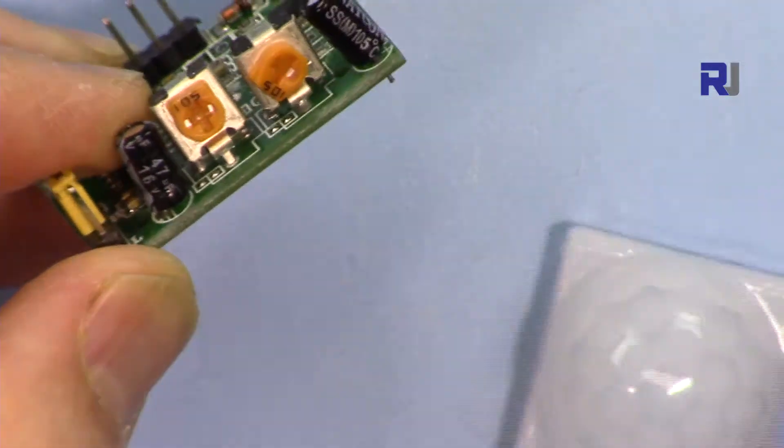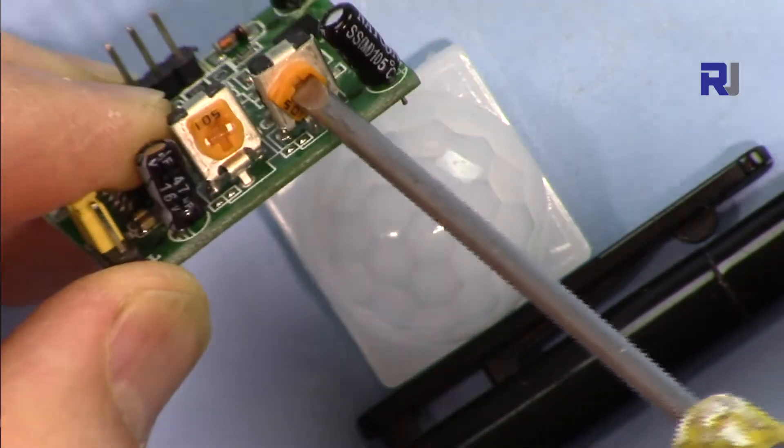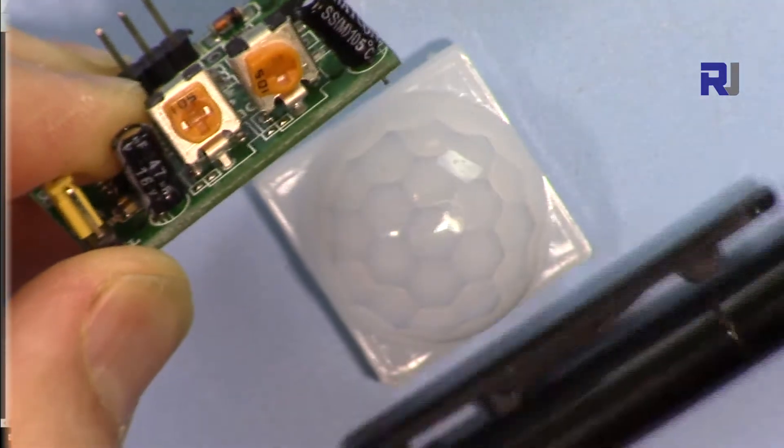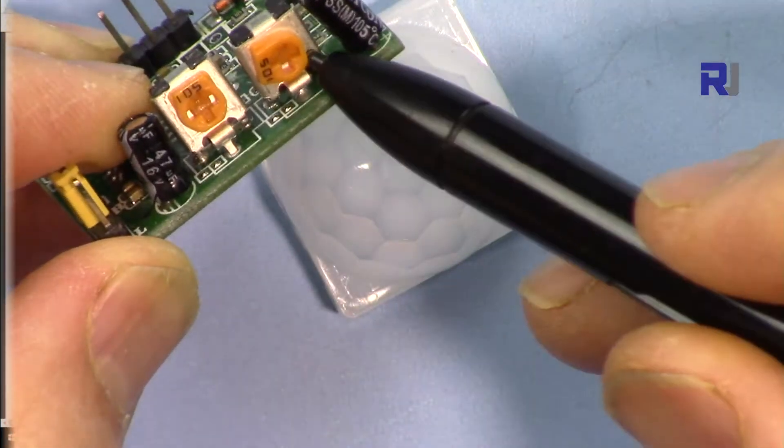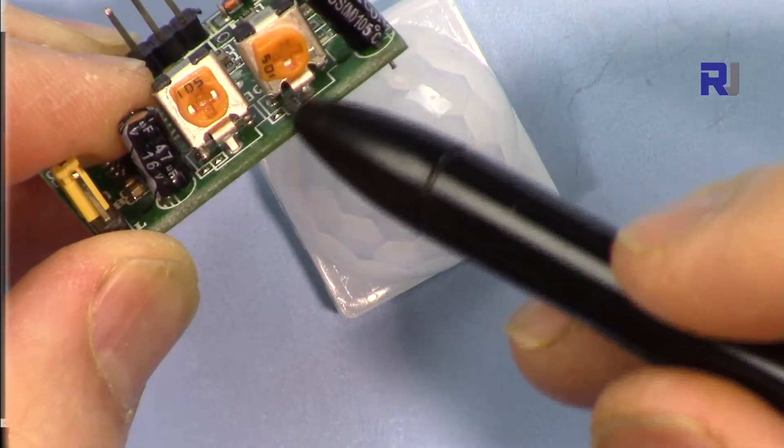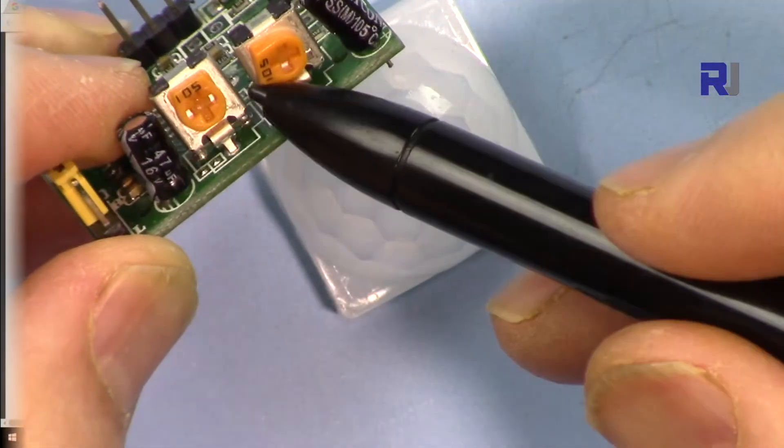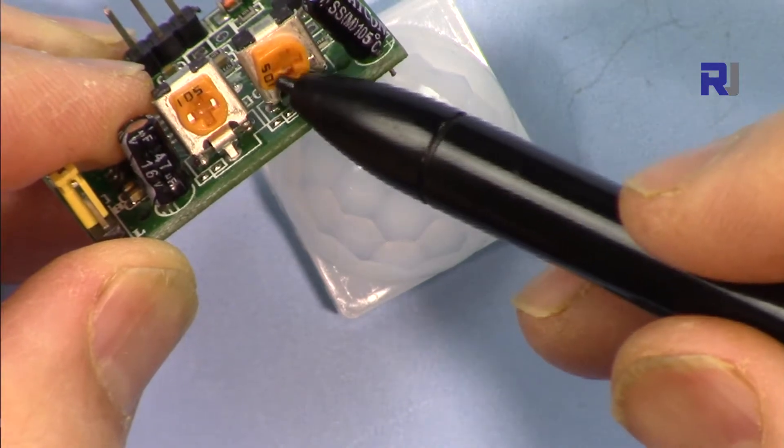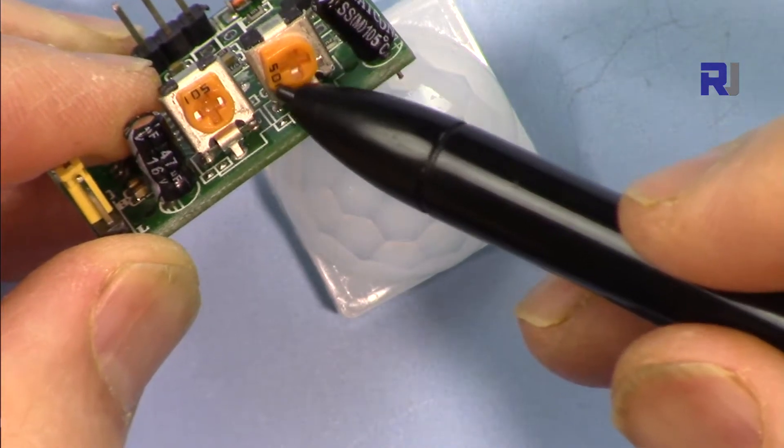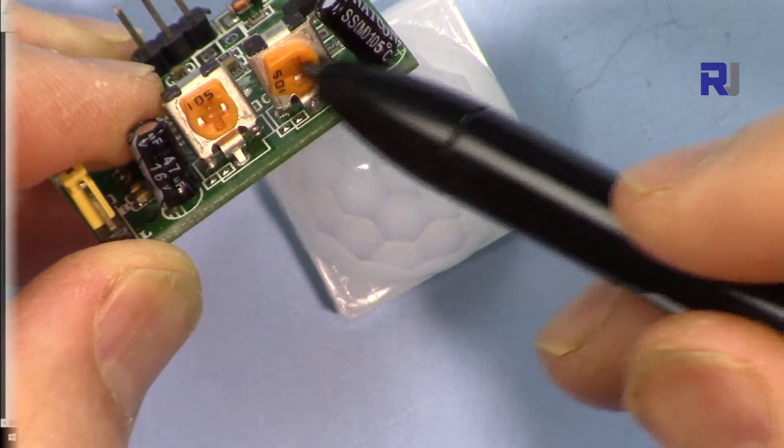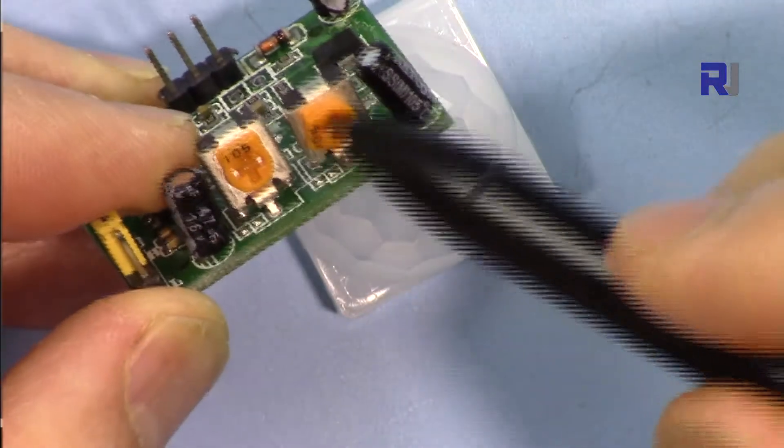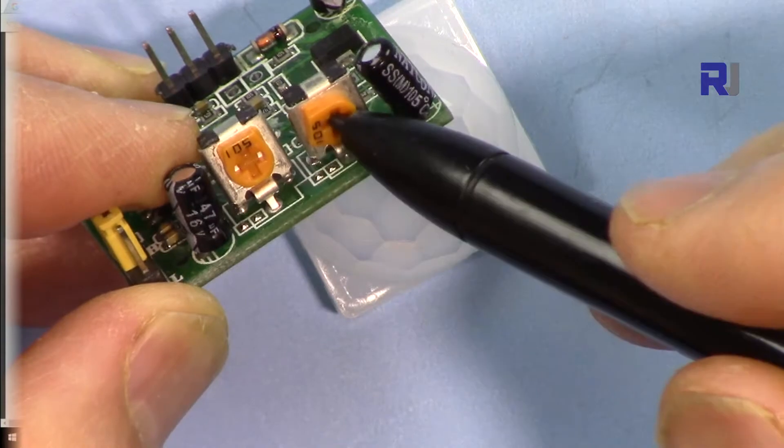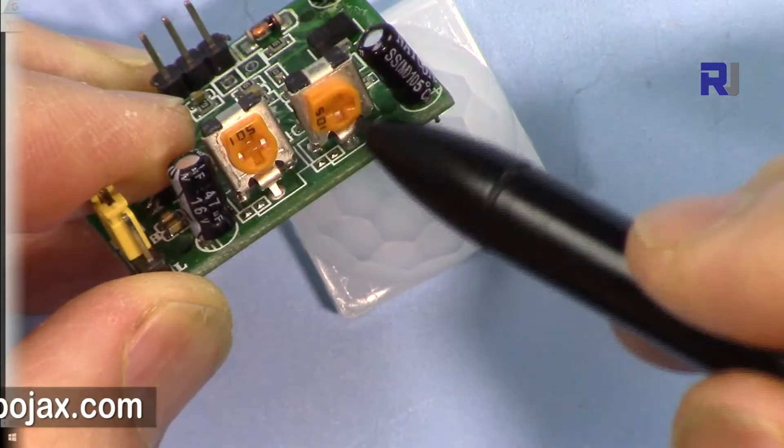This potentiometer can be adjusted to select the time delay. The time delay is the amount of time between each detection. If you select this to be continuous or very quick, it will detect quickly, or you can make it delay between detections. This is sensitivity, this is time delay.